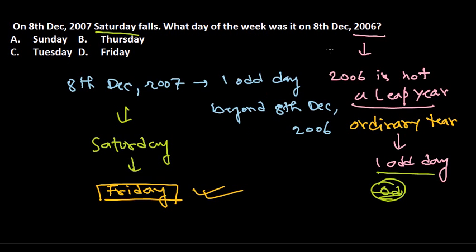In all these types of problems related to adjacent years, you first need to calculate whether you're dealing with a leap year or an ordinary year. If it's a leap year, the number of odd days is two; if it's an ordinary year, the number of odd days is one. Then simply go one day or two days before or after the known day to find your answer. That's it — I hope that's helpful. Thank you.